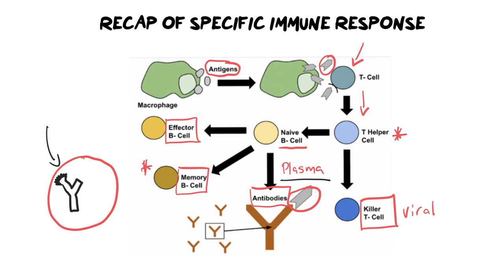This means the response is faster the second time you're infected. You can hopefully see how this all fits into having vaccinations. The first time you have a vaccine your body takes longer to respond, but it creates a memory of the infection. So if you ever are infected by that pathogen, your body will respond faster and you'll receive either no symptoms or really mild symptoms like maybe a runny nose and a light fever.